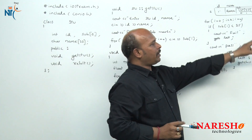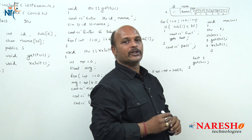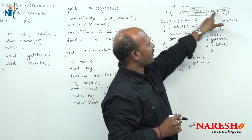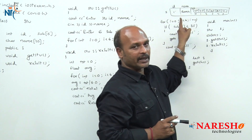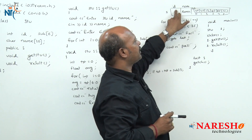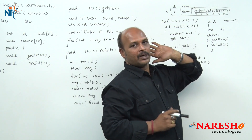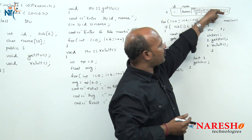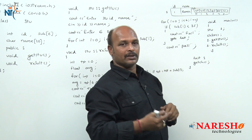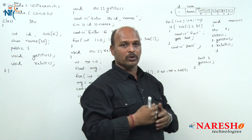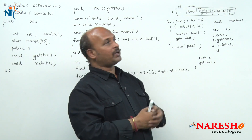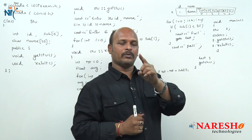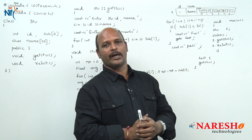In the main function, I have declared student S. S is an object. When the S object is created, memory is allocated inside the stack for the ID number, name, and 6 subjects. Here I have stored ID number 1, name Rama, and some subject marks — so it contains Rama's details. Now I want to store Sita's details also, but here only one object is created, and one object is able to store only one record at a time.